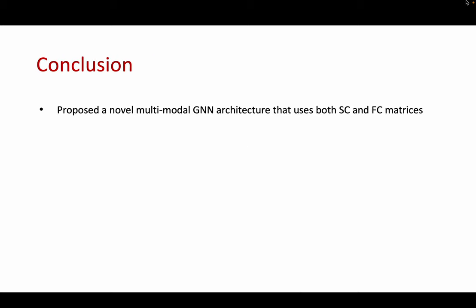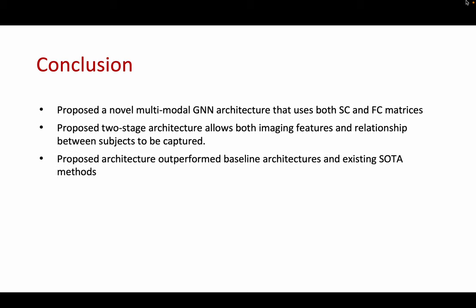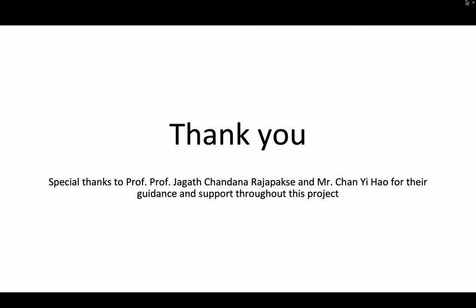In conclusion, we proposed a novel multimodal GNN architecture that uses both structural connectome and functional connectome matrices. Our proposed two-stage architecture allows both imaging features and relationships between subjects to be captured. We are able to outperform the baseline architectures and existing state-of-the-art methods. The brain GAT architecture can be easily extended to other imaging modalities and non-imaging features. Special thanks to Professor Jagath and Mr. Chan for their support and guidance throughout the project. Thank you for listening.